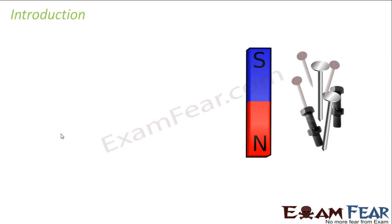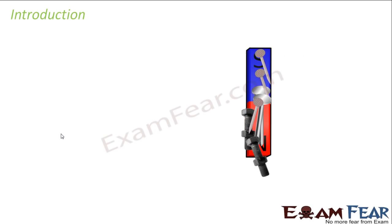Some of them are: you would have seen that nails get attracted towards a magnet. The magnetic compass is a small but very significant instrument — it helps us to find out direction. It has a needle which will always point in the north-south direction, and that is how it helps us to determine direction.